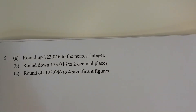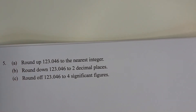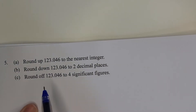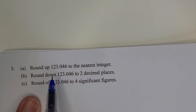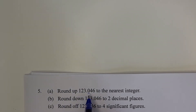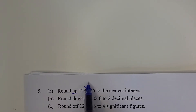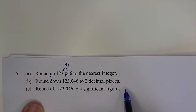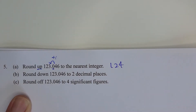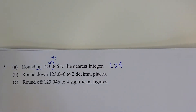Question number five is about rounding: run up, run down, and run off. Part a: run up this number to the nearest integer. Even though the digit after the integer is 0, since you are always running up you add one, so the answer is 124.